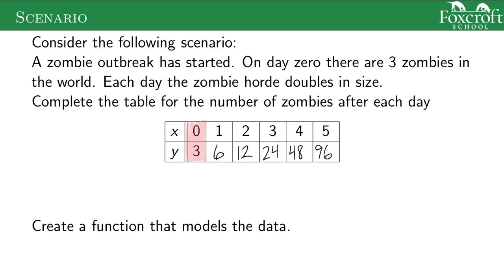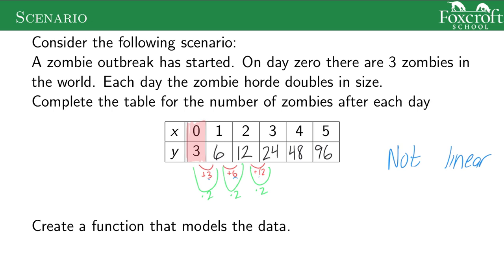Is this a linear equation? The answer is no, because the difference changes each step: to get from three to six I add three, six to twelve I add six, twelve to twenty-four I add twelve — I'm not adding the same number every single time, so this is not linear. But what am I doing each time? If you're doubling something, you're multiplying by two. So every single step I'm multiplying by two to get to the next one. Instead of adding, I'm multiplying.